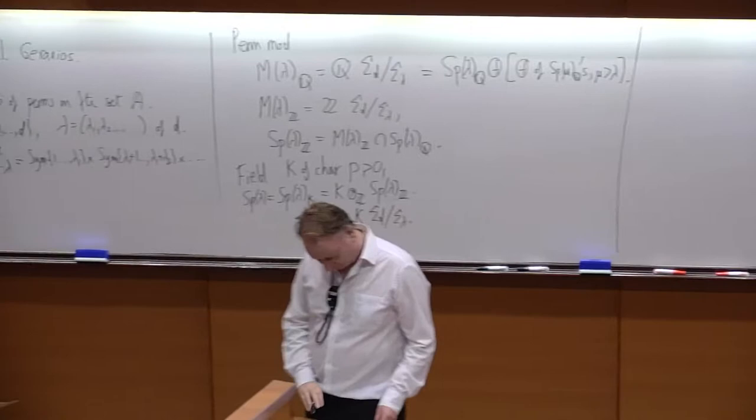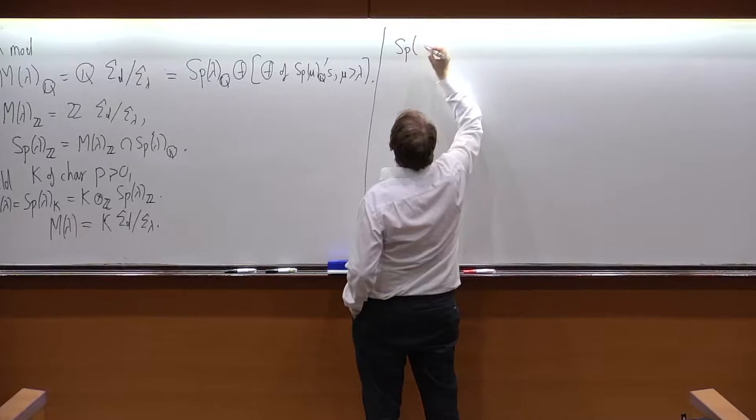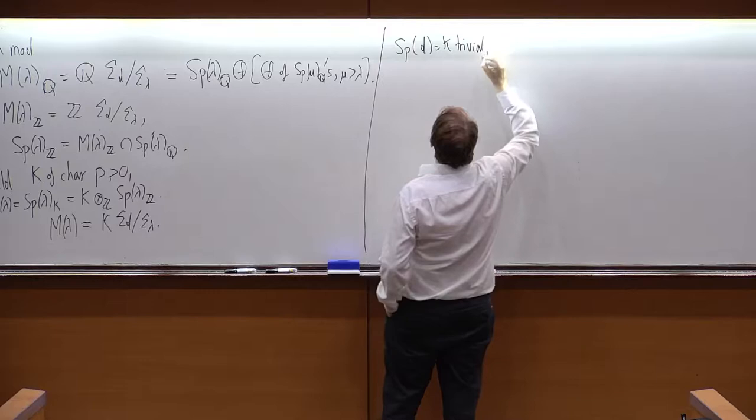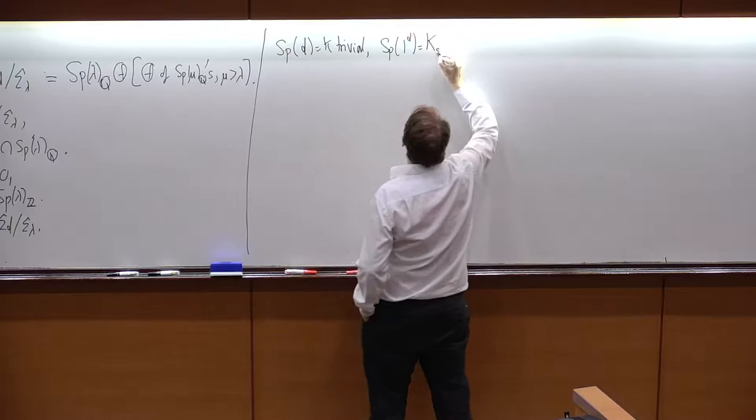So, it's usual to remark that the Specht module for D itself is a trivial module, and the Specht module for 1 to the D is the sign.